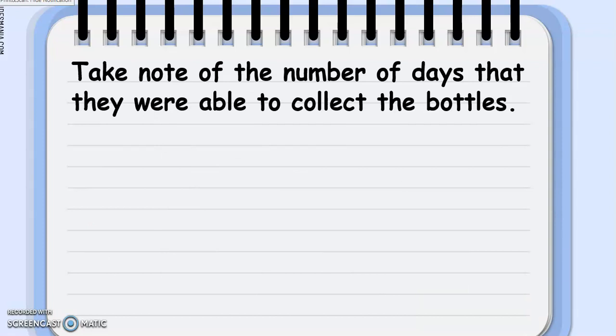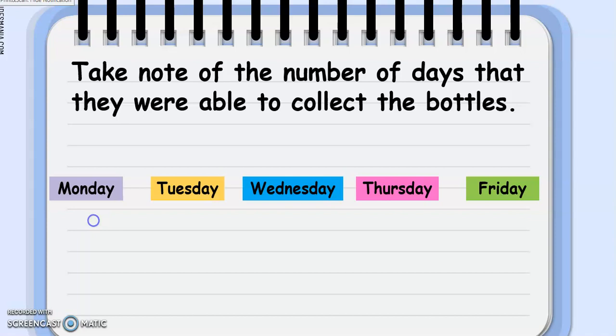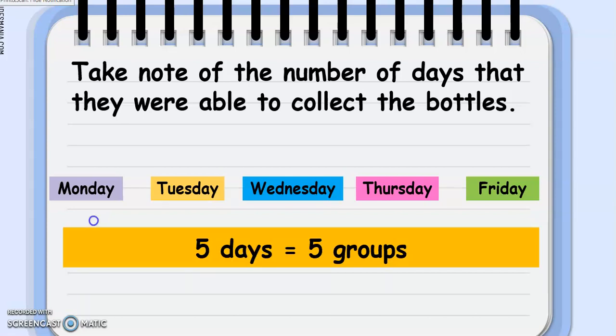Please take note of the number of days that they were able to collect the bottles. So, we have here Monday, Tuesday, Wednesday, Thursday, and Friday. So, there are 5 days. And, we may look at them as 5 groups as well.